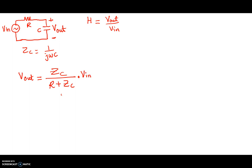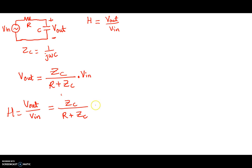If we rearrange this, we get V_out over V_in, which is equal to the impedance of the capacitor divided by R plus the impedance of the capacitor. By definition, this is equal to the transfer function — given by the ratio of the impedance of the capacitor divided by the sum of the impedances of the resistor and capacitor. Now let's replace with the value of 1 over jωC for the impedance of the capacitor, divided by R plus 1 over jωC.